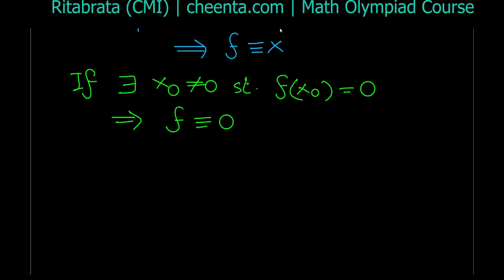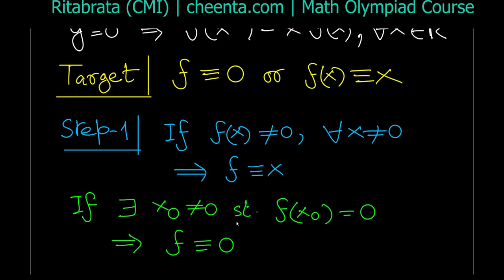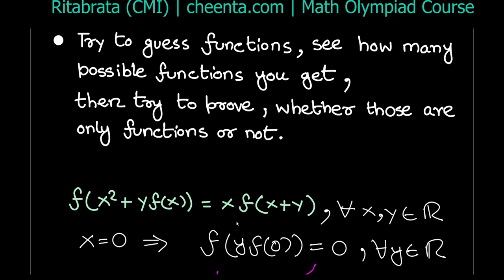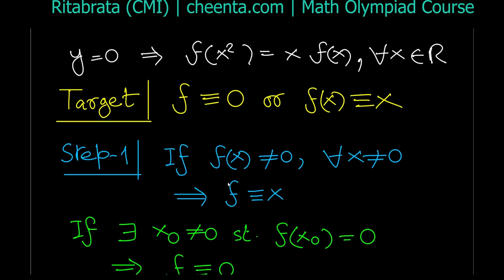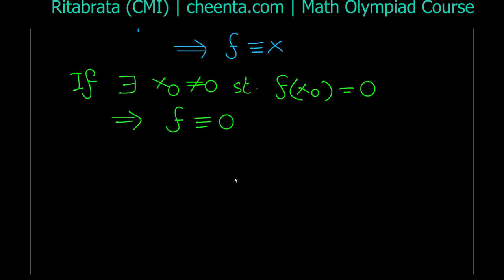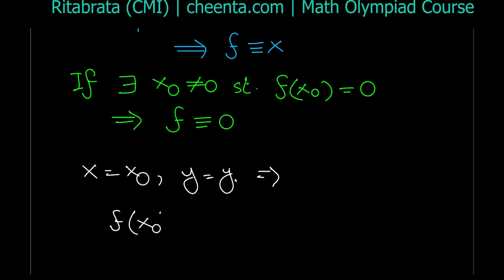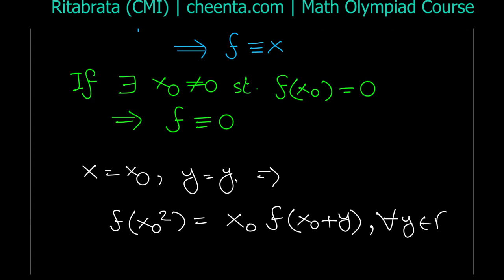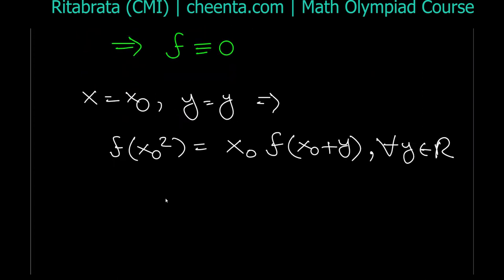Let's prove this. We have x₀ ≠ 0 and f(x₀) ≠ 0. Put x = x₀ in the main equation keeping y free. We get f(x₀² + y·f(x₀)) = x₀·f(x₀ + y). Since f(x₀) ≠ 0, the left side traces values f(x₀² + y·f(x₀)), and this equals x₀·f(x₀ + y) for all real y.